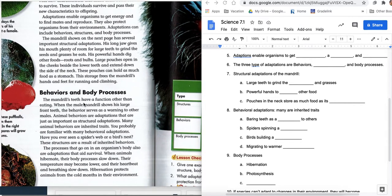The mandrel's teeth have a function other than just eating. When the male mandrel shows his large front teeth, the behavior serves as a warning to other males, letter A. Animal behaviors are adaptations that are just as important as structural adaptations. Many animal behaviors are inherited traits. That's key to the worksheet that you're working on. These are inherited. You probably are familiar with many behavioral adaptations. A spider's web, a bird's nest, these structures are the result of inherited behavior.